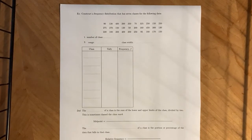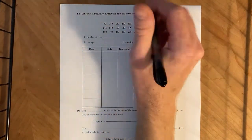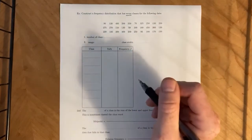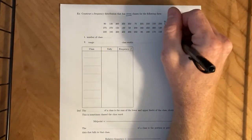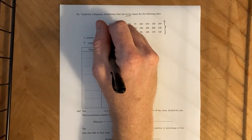All that stuff will make sense, hopefully, in this example here. So we're asked to construct a frequency distribution that has seven classes for the following data set, this one. So number of classes, we're told that we have seven.